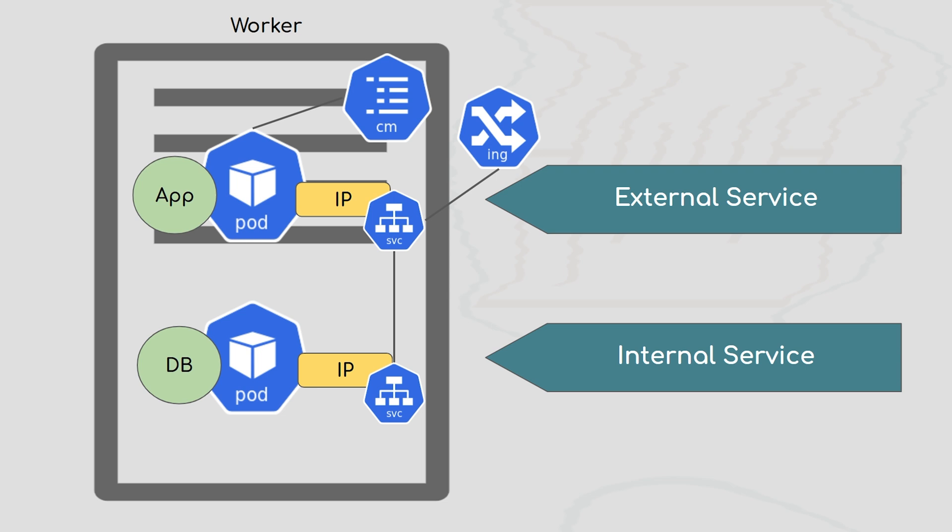There are scenarios where you need to store credentials or passwords. Storing these in a ConfigMap as plain text is not feasible and is a security risk. For this, Kubernetes has another component called Secrets. Secrets store your credentials and private data in Base64 encoded format. You can deploy those secrets into your Kubernetes cluster to securely manage sensitive information.